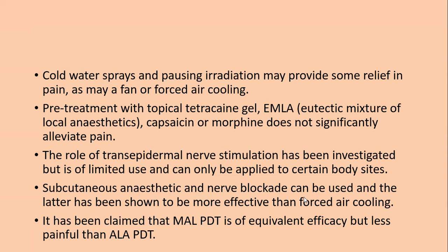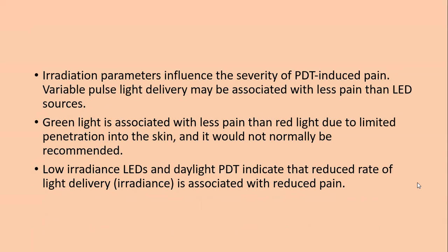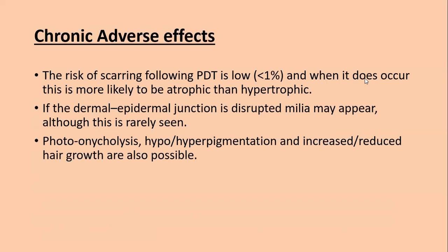Cold water sprays and pausing irradiation may provide some relief, as may a fan or forced air cooling. Pre-treatment with topical tetracaine gel (EMLA), capsaicin, or morphine does not significantly alleviate pain. Transcutaneous electrical nerve stimulation is of limited use; subsequent subcutaneous anesthetic and nerve blockade can be used and may be more effective. Irradiation parameters influence pain severity: variable pulse light delivery, green light, and low-irradiance LED and daylight PDT are associated with less pain.